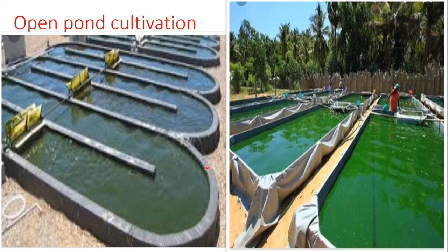Raceway ponds are usually lined with plastic or cement and made up of about 20 to 35 centimeters in depth to ensure adequate exposure to sunlight. Paddle wheels provide motive force and keep the algae suspended in the water. The ponds are supplied with water and nutrients, and the mature algae can be continuously removed at one end.